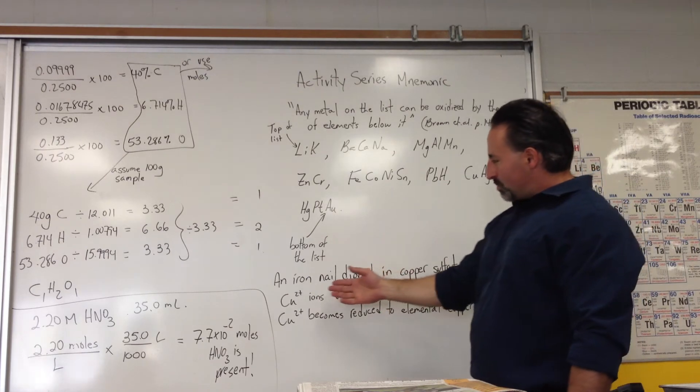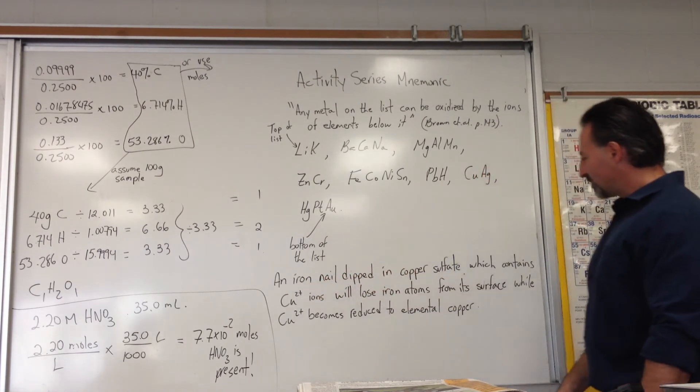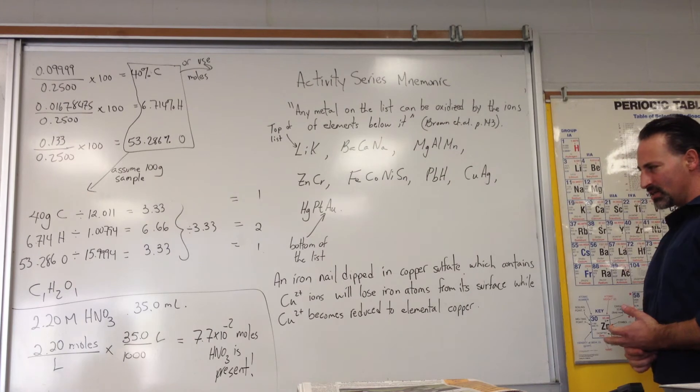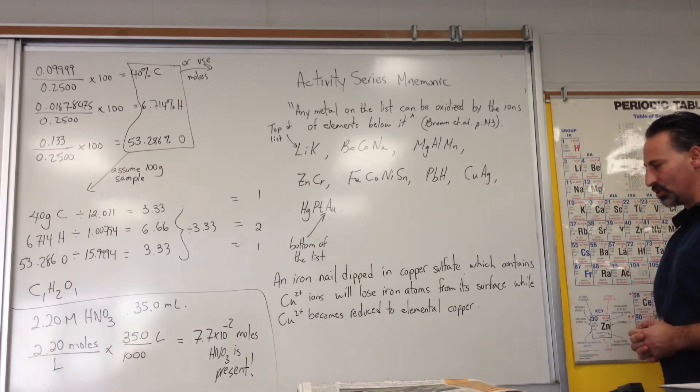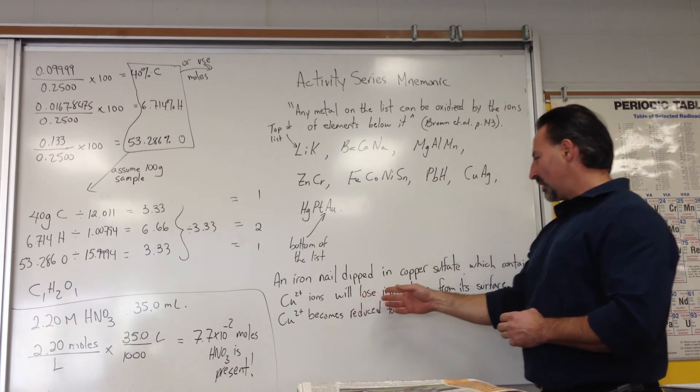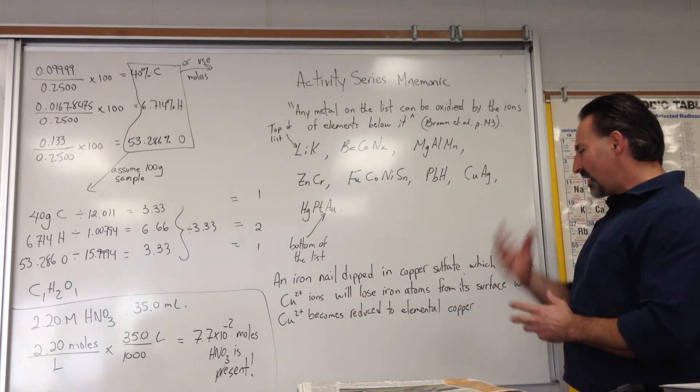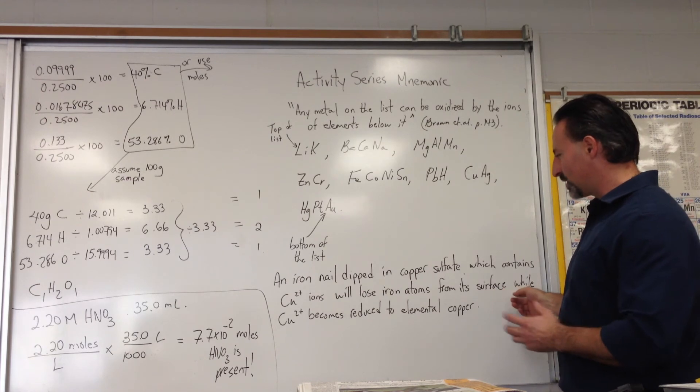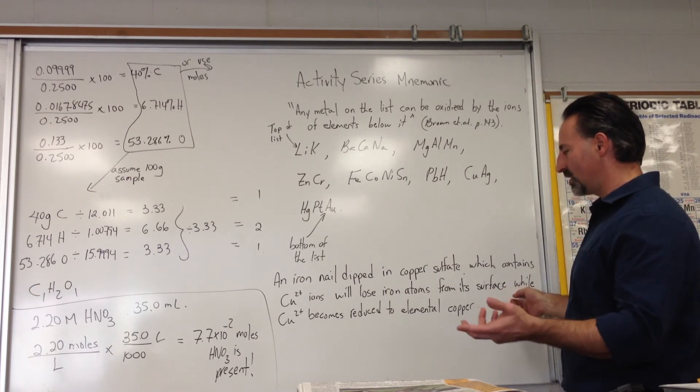Another way of putting this is if you took an iron nail and dipped it in a copper sulfate solution, which contains copper 2 plus ions, cupric ions, the iron nail will lose iron atoms from its surface because they will have oxidized.